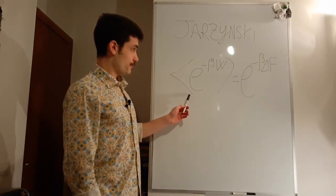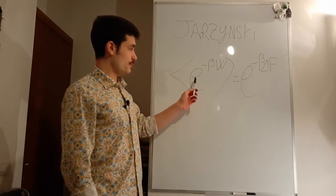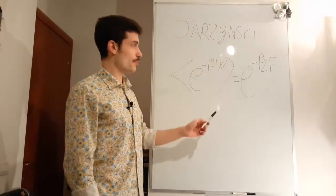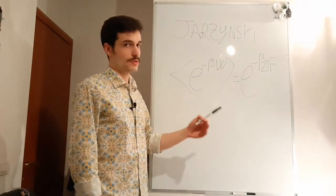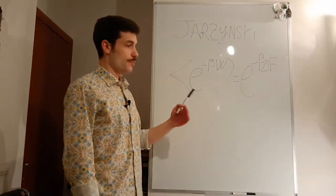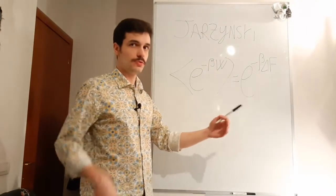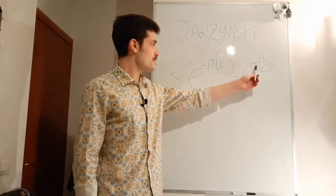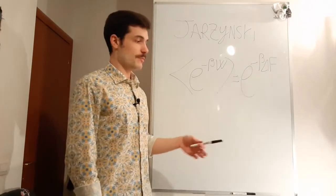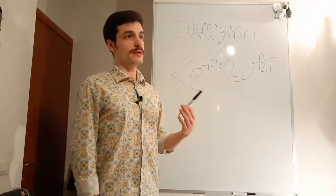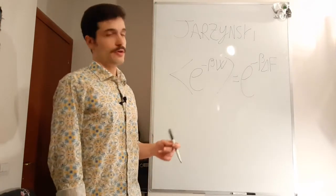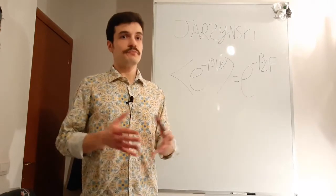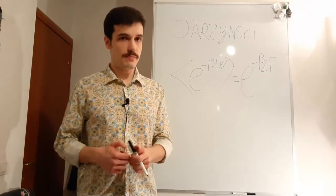In the Jarzynski theorem, the average of e to the minus beta W, where W is the work of the forward reaction — because in the Jarzynski theorem we are only looking at one direction, we don't work with both directions — is equal to e to the minus beta delta F. Delta F is the Helmholtz free energy if you're working in the canonical ensemble, and the Gibbs free energy if you are working in the isothermal-isobaric ensemble.